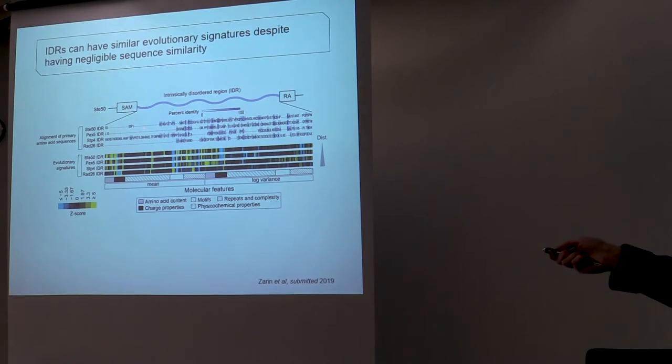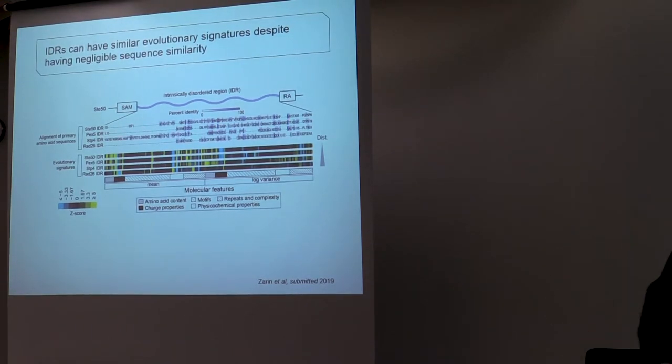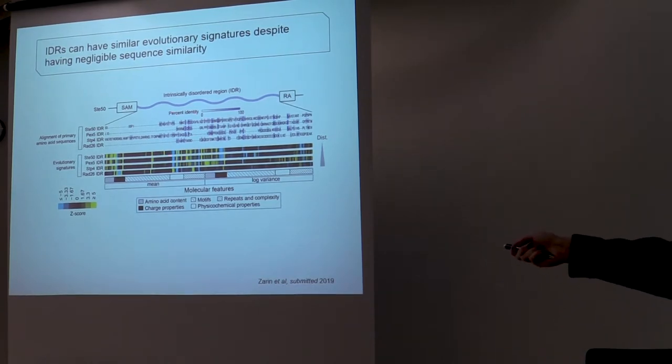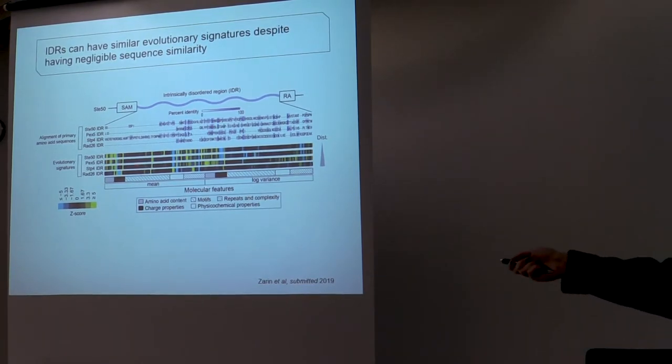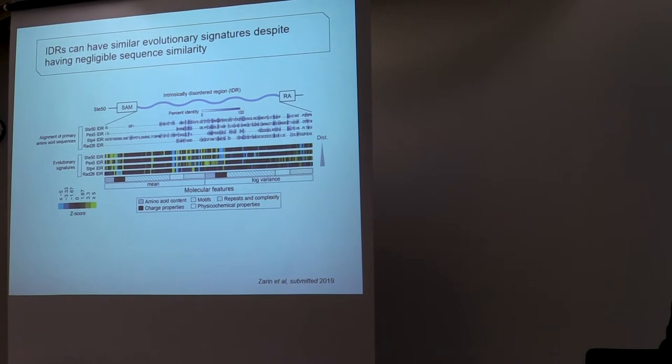And you can see in this example that although there is again no sequence homology between these four example disordered regions, their evolutionary signatures actually indicate that three of them are pretty similar to each other, while one of them is very different. So they have different signals in these two different spaces.